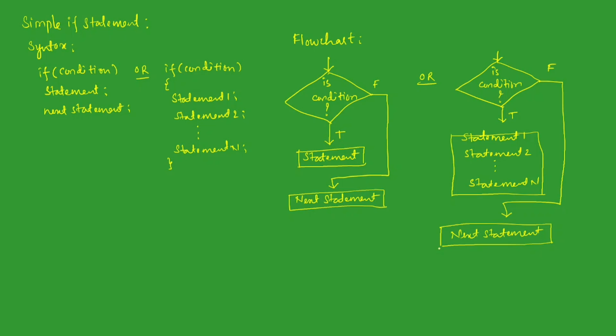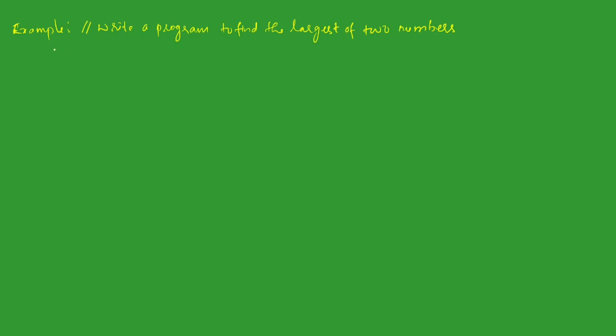Now let us look at a programming example. We will take a programming example: a program to find the largest of two numbers using the simple if statement only. Let us begin with the preprocessor directives. I will write '#include' with the angular brace and the 'stdio.h' header file — that is the standard input-output header file.